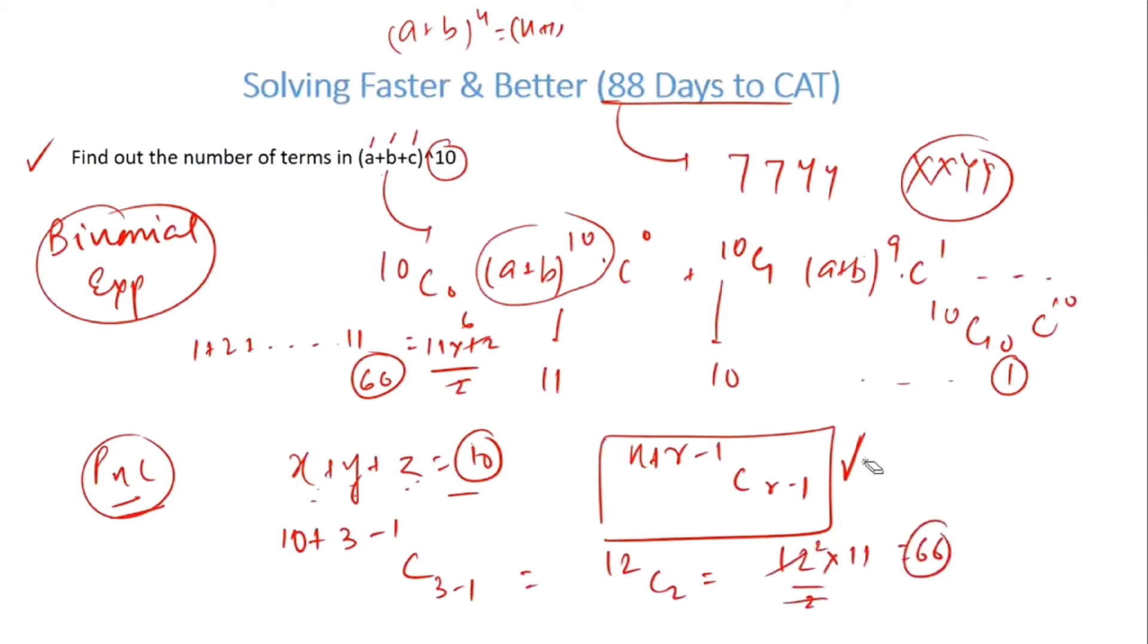I am pretty sure you can now solve any of the questions that follow. For example, (a+b+c+d) to the power 14, what is the answer? Now you can do this. Now n = 14, r = 4, so 14 + 4 - 1 C 4 - 1, which becomes 17C3.